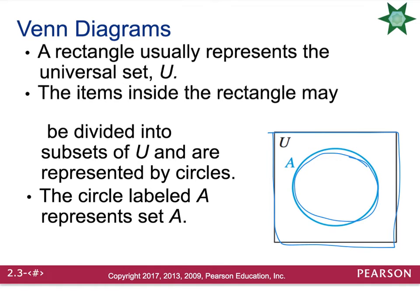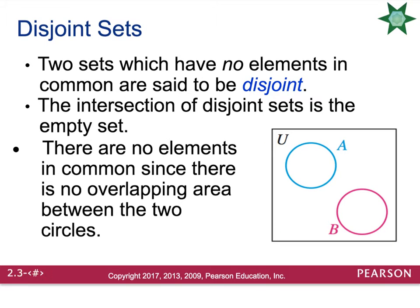For example, if my universal set was actors, then my subset A could be male actors — it would be a group within the set. One of the cases you can have when you introduce more than one group is disjoint sets. What it means for two sets to be disjoint is that they don't have anything in common. There's no overlap. For example, set A could be male actors and set B could be female actors. The items outside of the circles could be other types of actors, maybe pet actors.